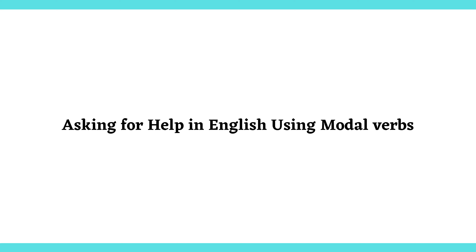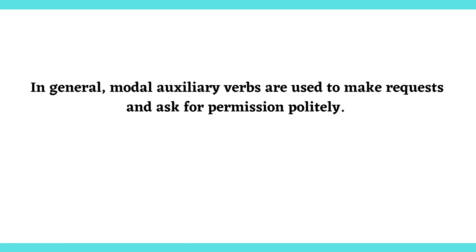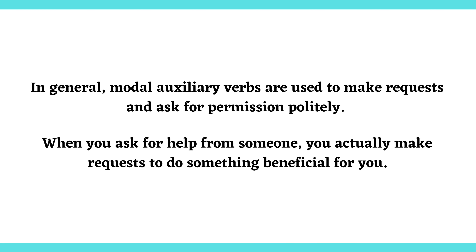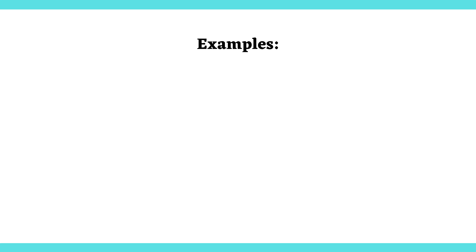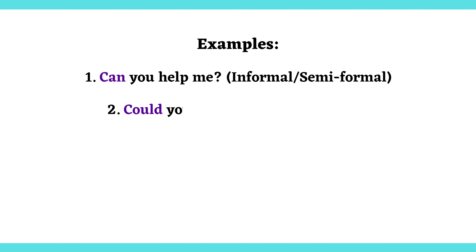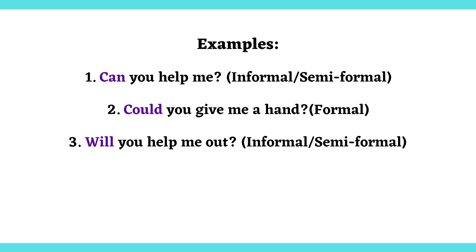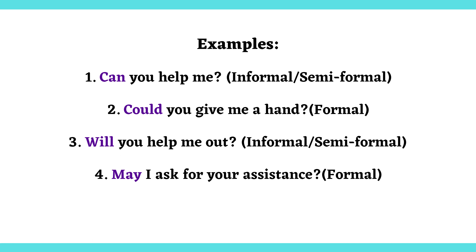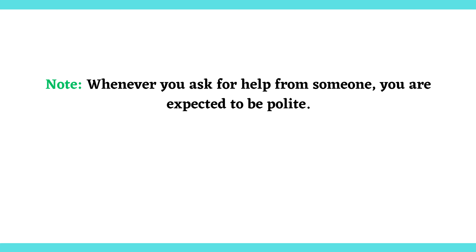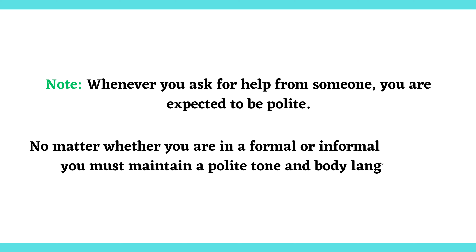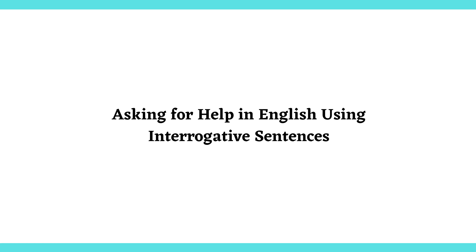Asking for help in English using modal verbs. In general, modal auxiliary verbs are used to make requests and ask for permission politely. When you ask for help from someone, you actually make requests to do something beneficial for you. Examples: 'Can you help me?' 'Could you give me a hand?' 'Will you help me out?' 'May I ask for your assistance?' 'Would you do me a favor?' Note: whenever you ask for help from someone, you are expected to be polite. No matter whether you are in a formal or informal situation, you must maintain a polite tone and body language.